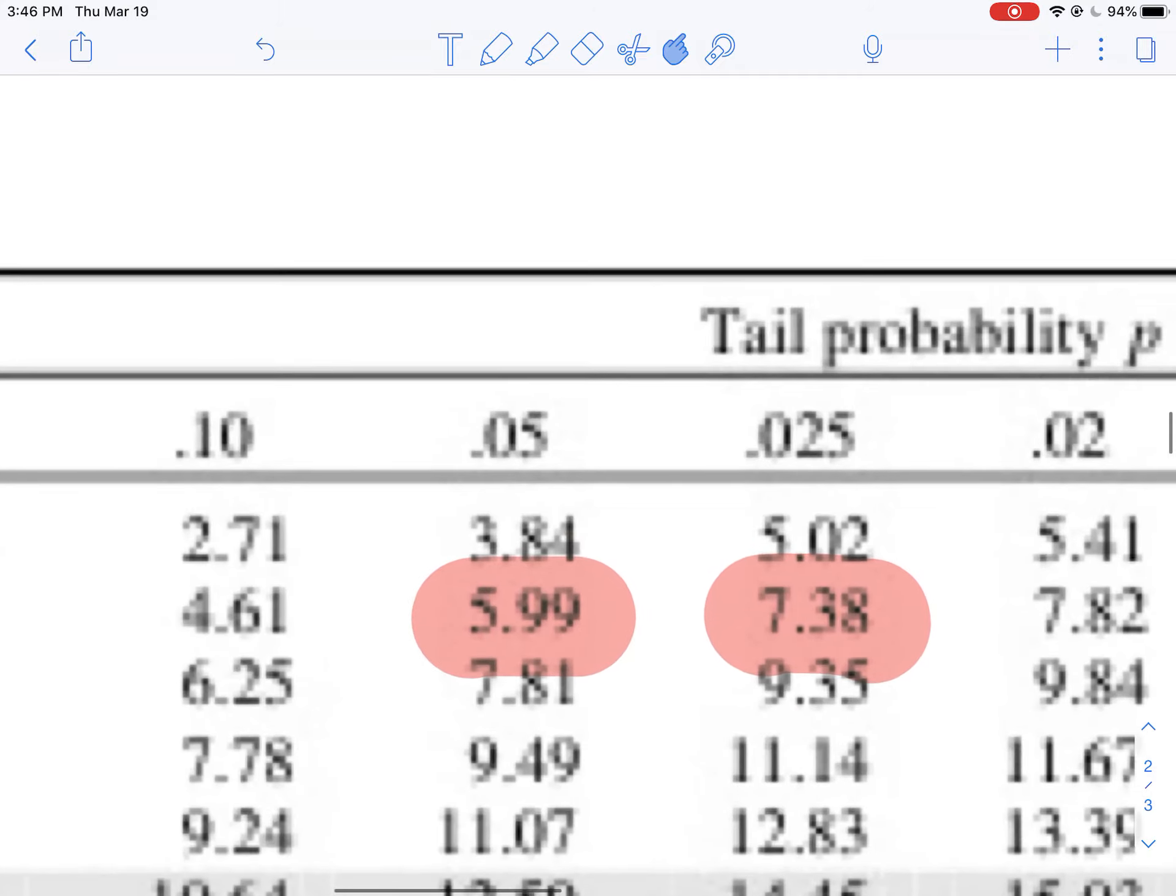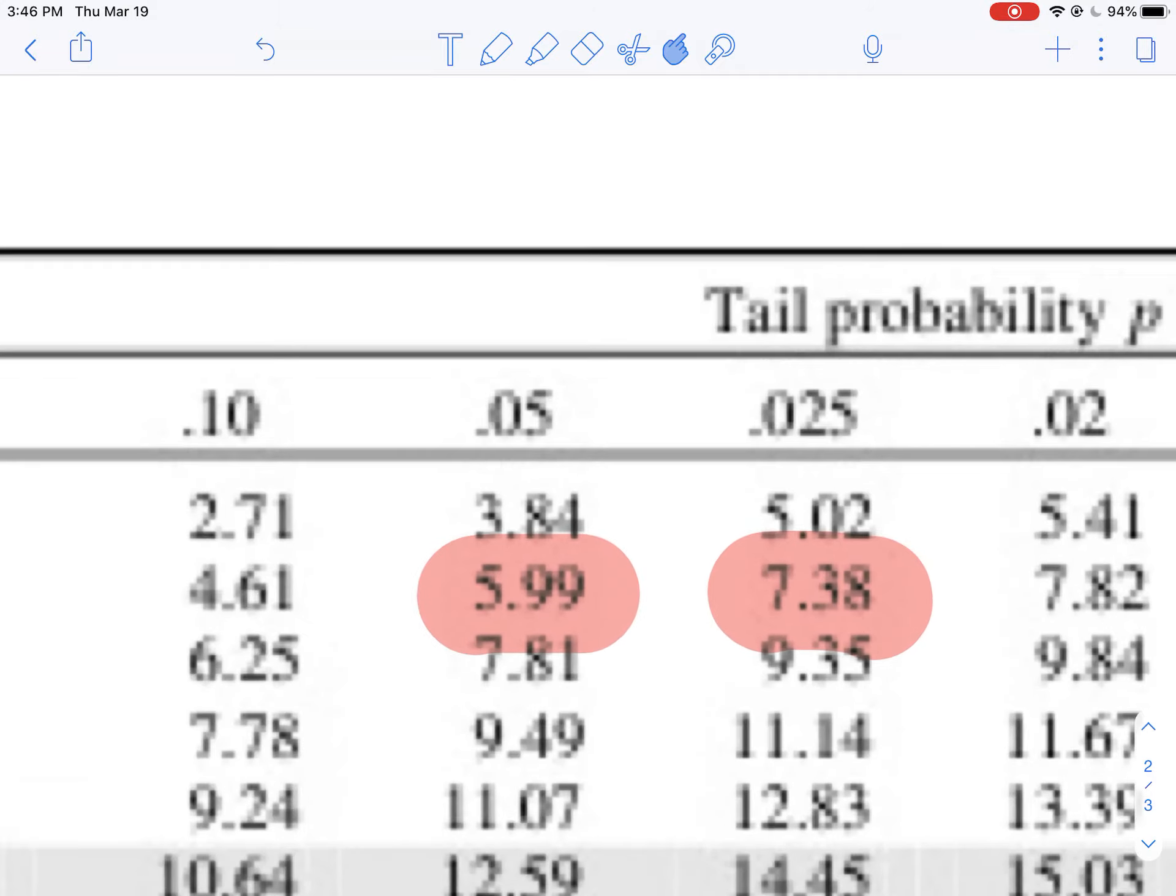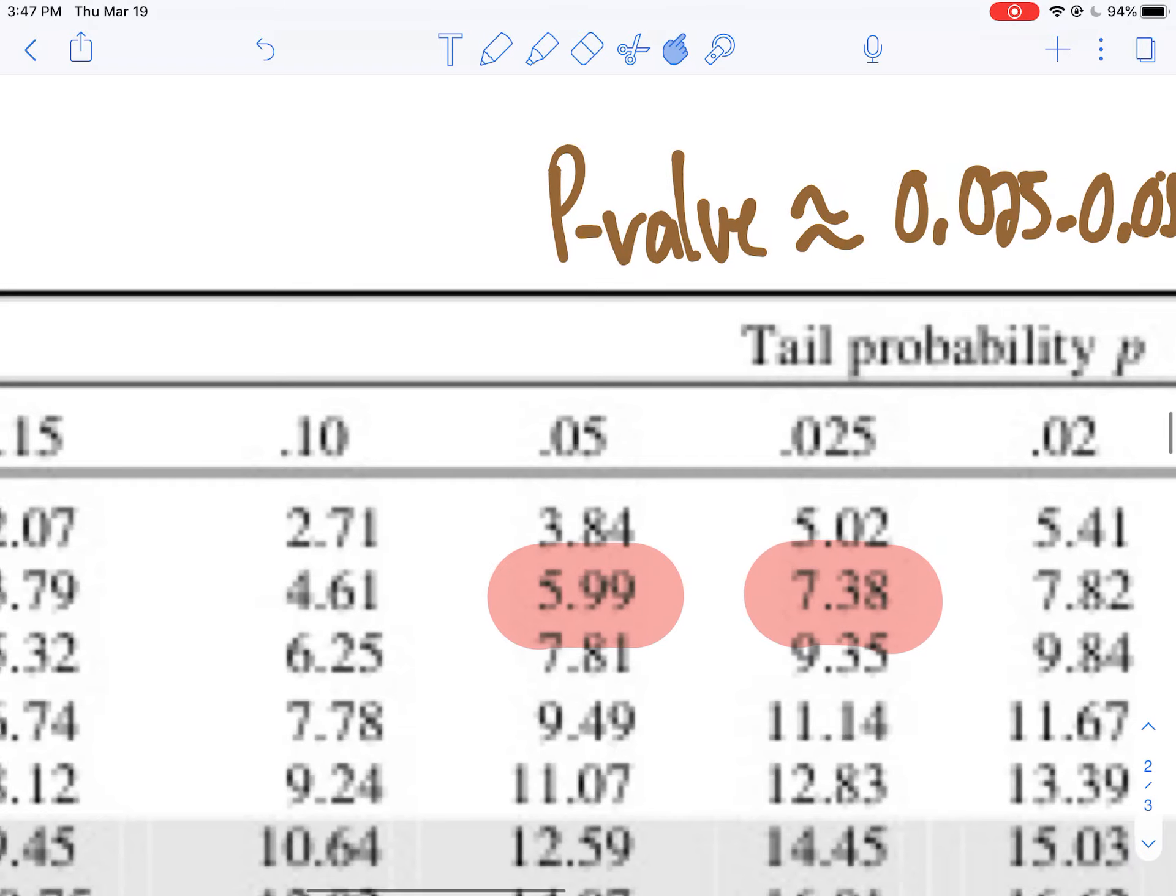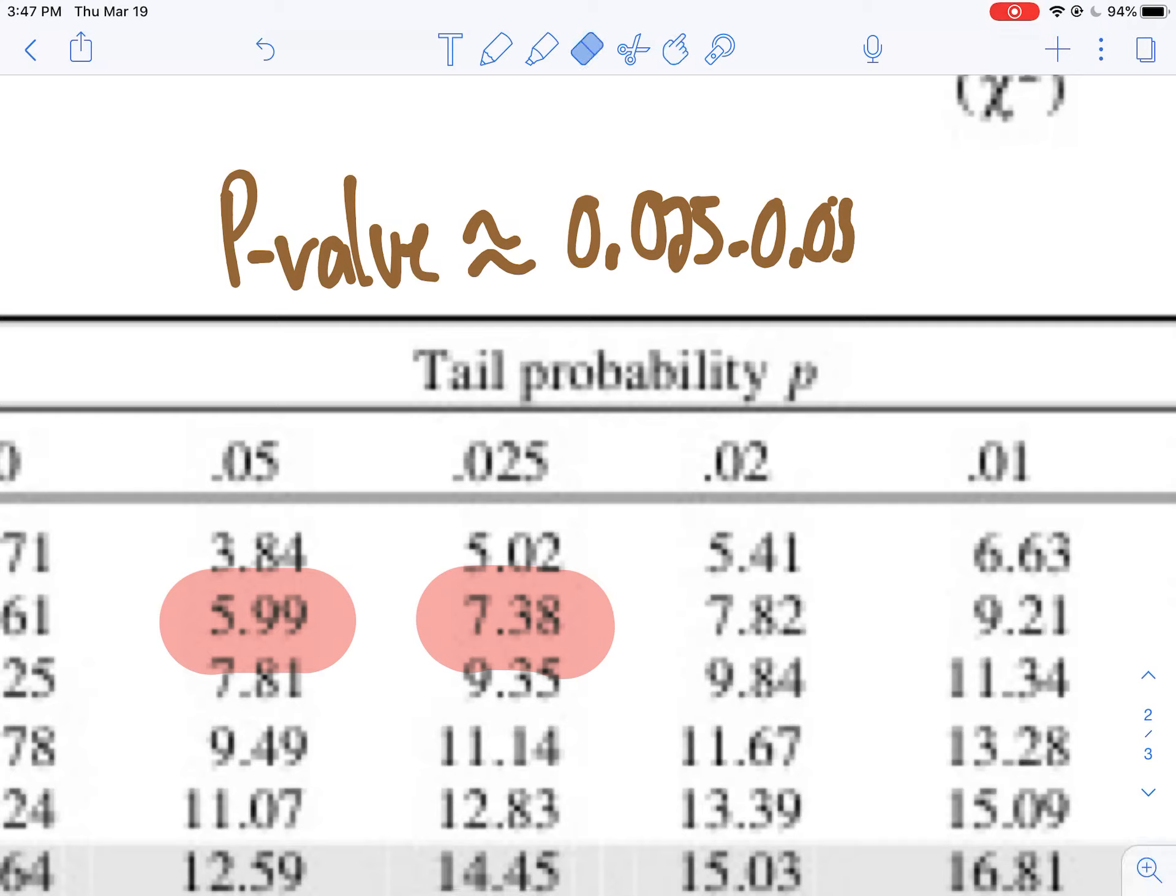My chi-square statistic fell between 5.99 and 7.38, which tells me that based on the table here, my p-value, it's going to be between 0.025 and 0.05, which as we see when I plugged into my calculator, that checked out. We ended up getting right in between there. So table's also a function you can use if you need to.